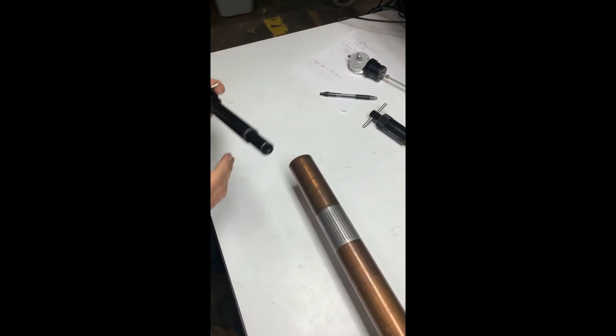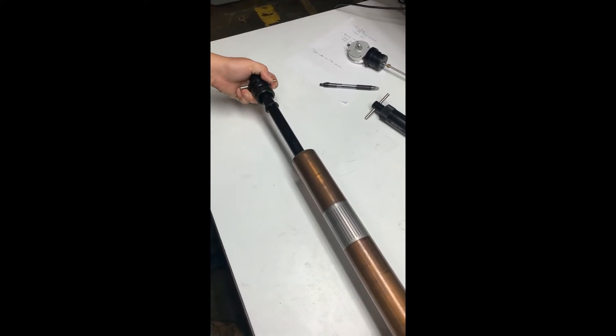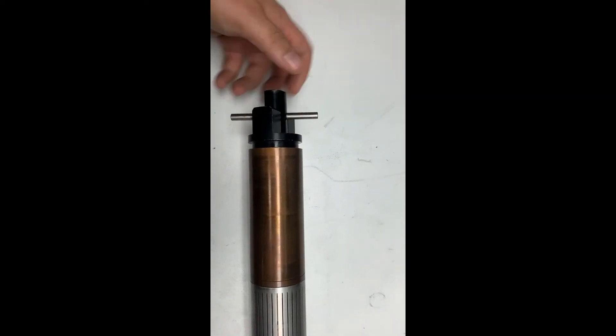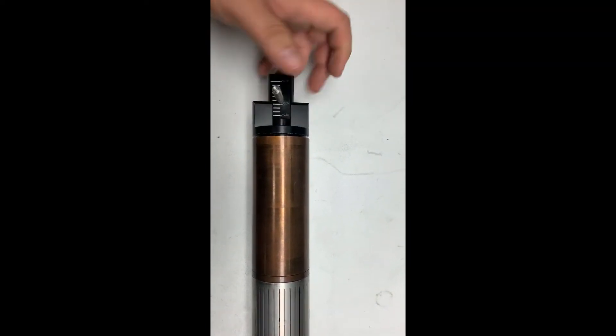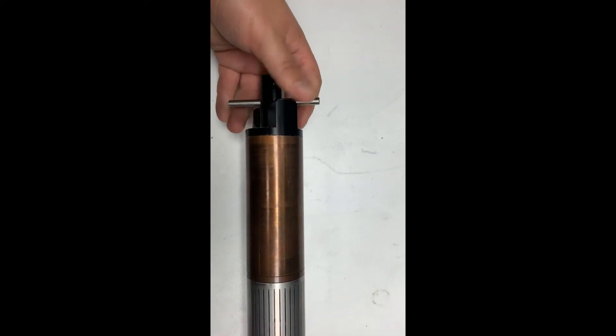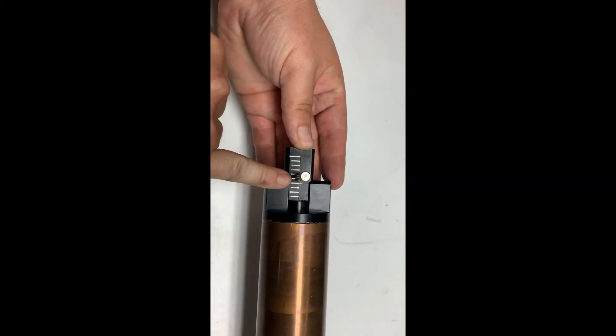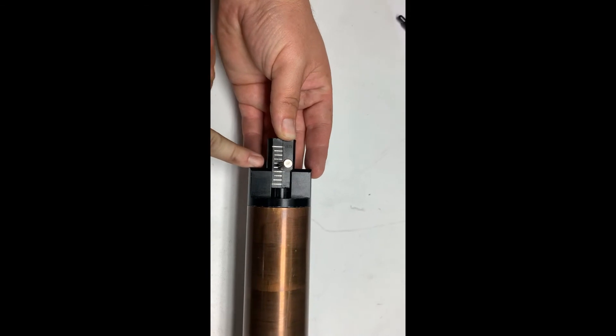Next we will be inserting our verification tool. The zero line should line up with your shoulder.